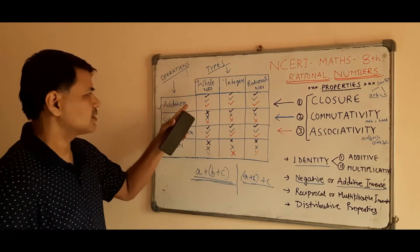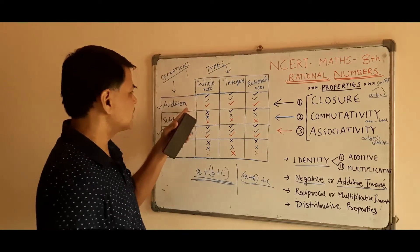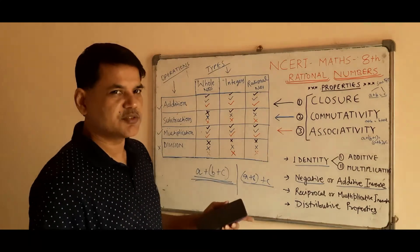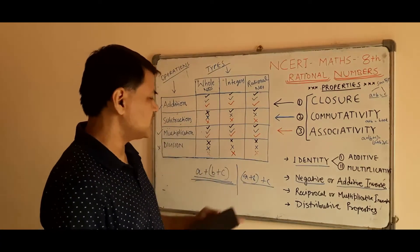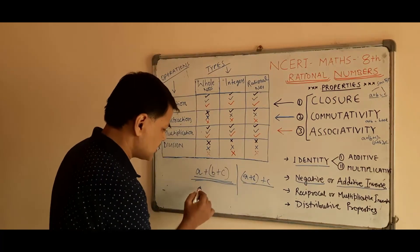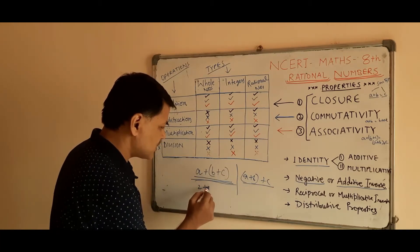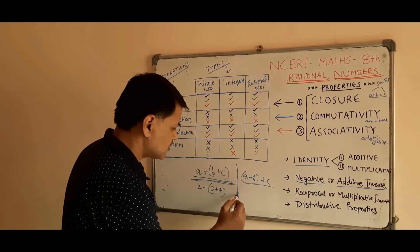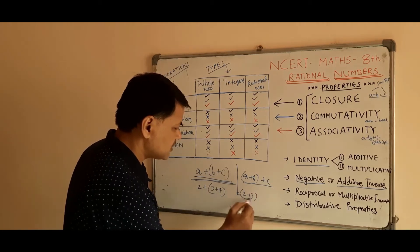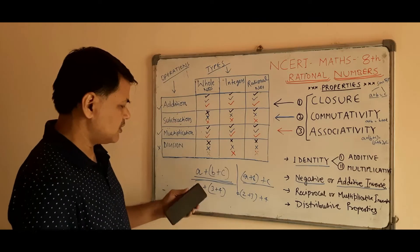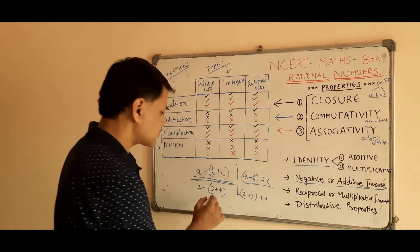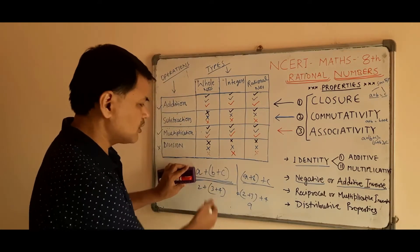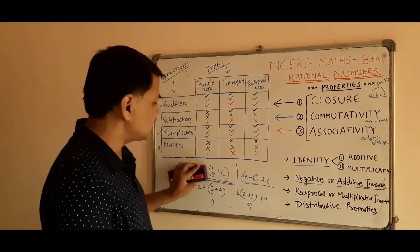As per the cheat sheet, for addition everything is associative, and for division nothing is associative. For multiplication, everything is also associative. For a quick example: 2 plus (3 plus 4) equals (2 plus 3) plus 4 — we know the result is the same. So integers, whole numbers, and even rational numbers are associative for addition.